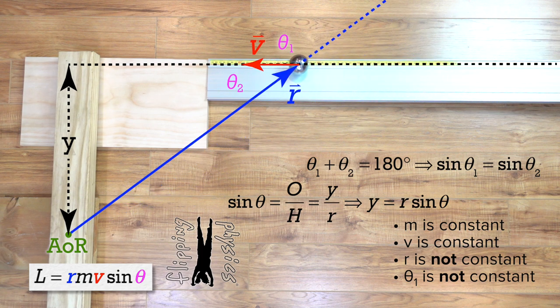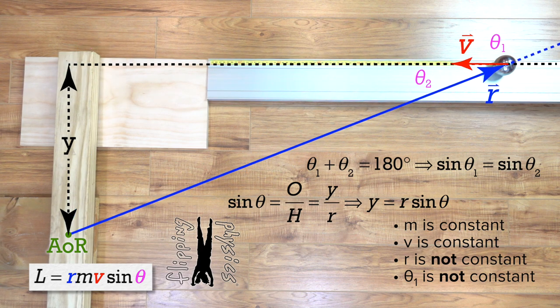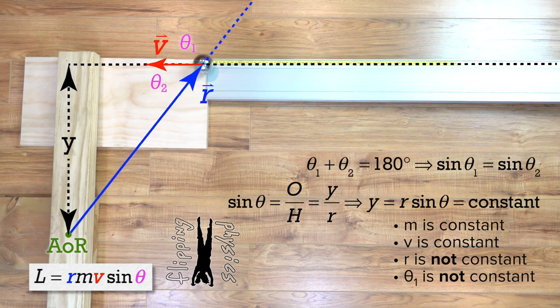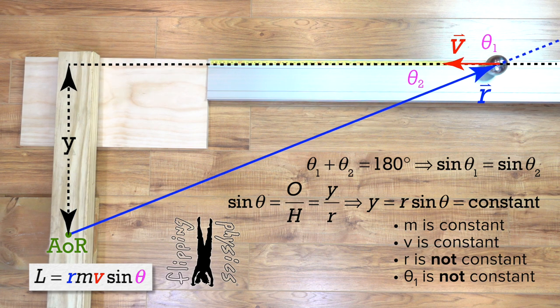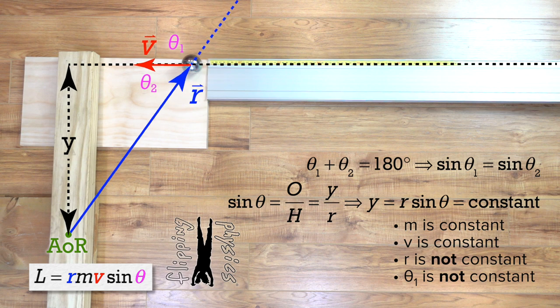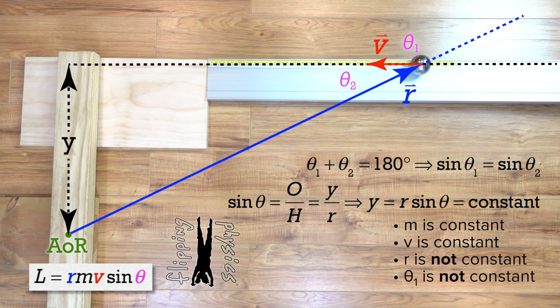Wait a minute, y has a constant value. That means that r times sine theta is also constant and it equals y. Wow, that means that even though r and theta change as the point particle moves toward the wooden board, r times sine theta which equals y does not change.